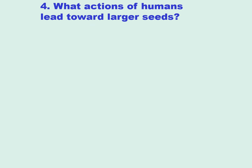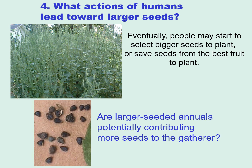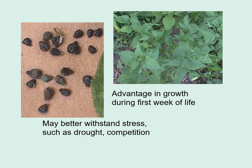So what actions of humans lead toward larger seeds? Eventually, people start to select bigger seeds to plant, or they save seeds from the best fruit — the bigger fruit or the best tasting fruit. But potentially, without intention, large-seeded annuals might contribute more seeds to the gatherer, because seed size is involved with the whole spectrum of life history traits, including juvenile survival rate and time to reproduction. A larger seed, when it lands in the ground, might have an advantage in growth during the first week of life, causing that seedling to shoot up, shade out others, produce more stems, contribute more seeds to the harvest, and better withstand stress such as drought and competition.